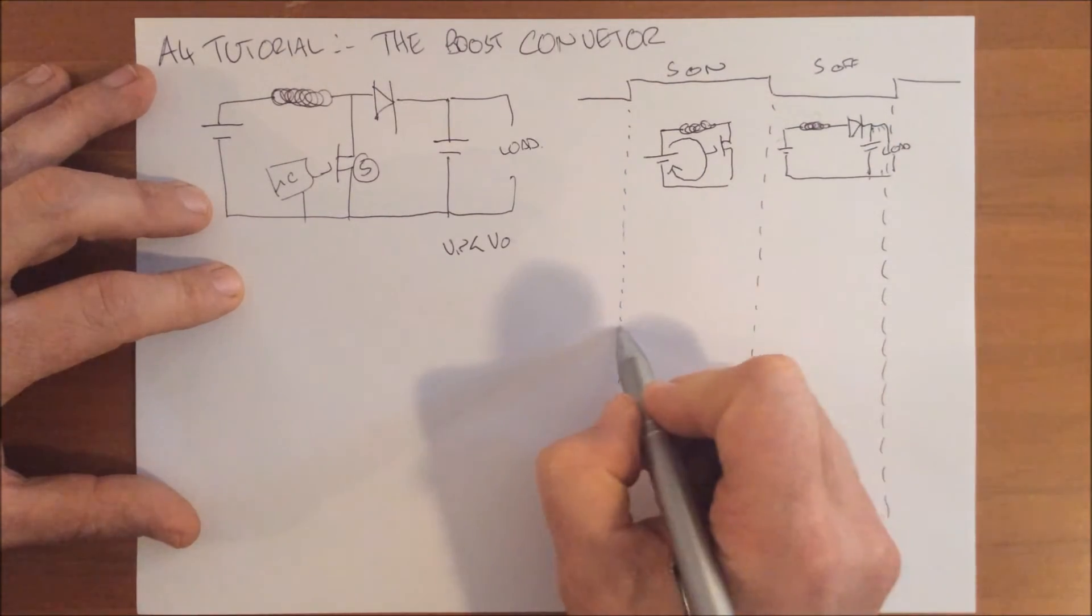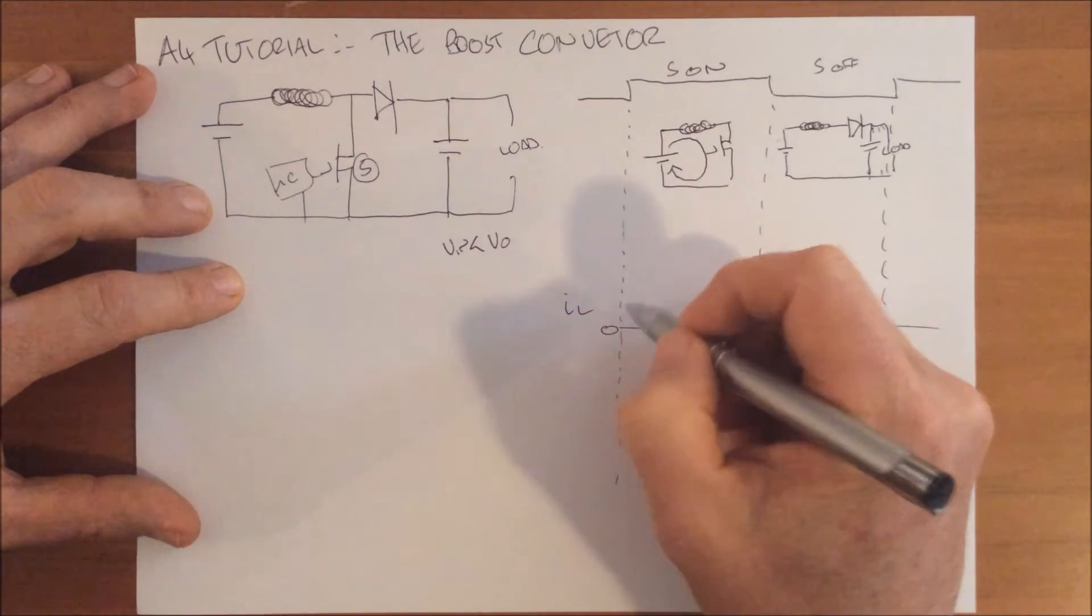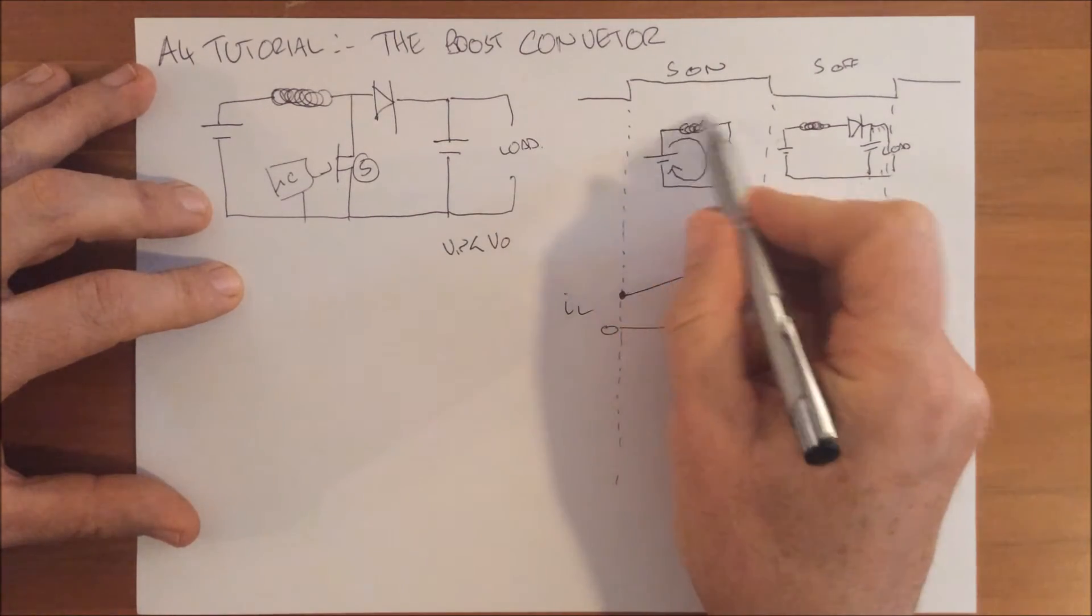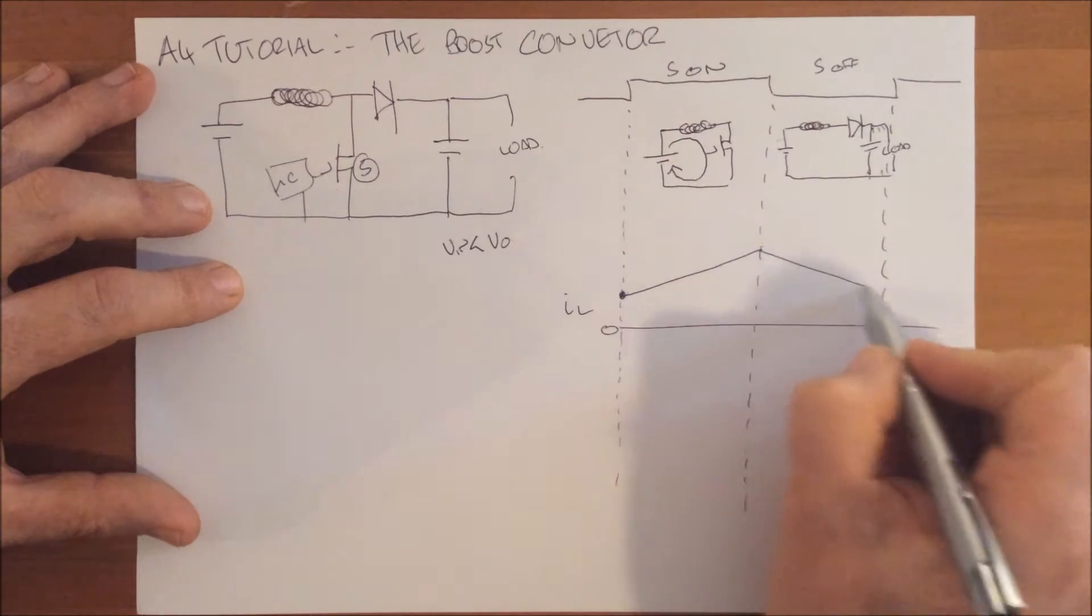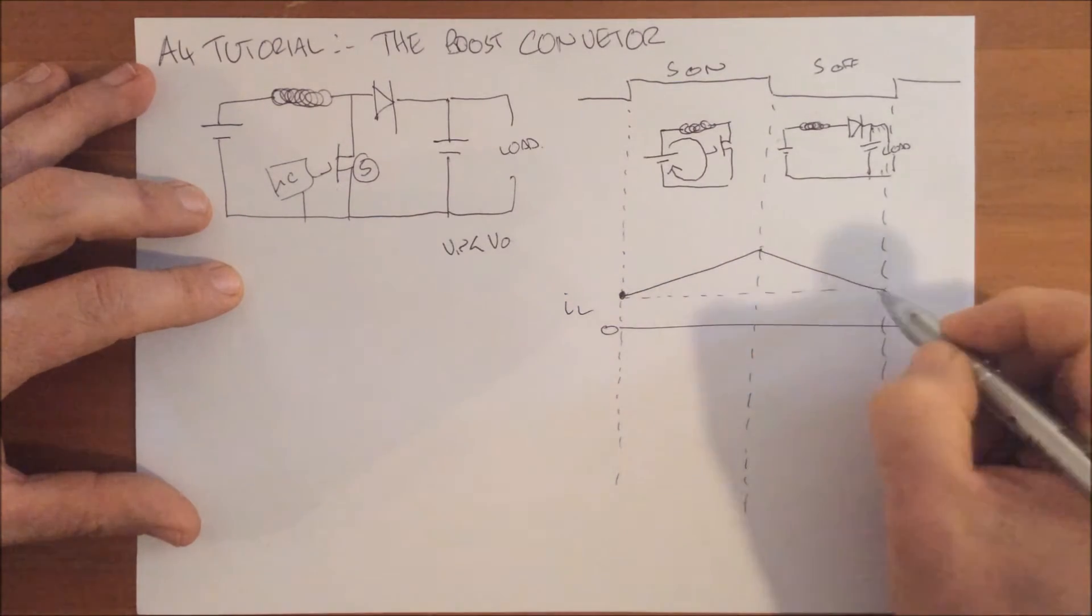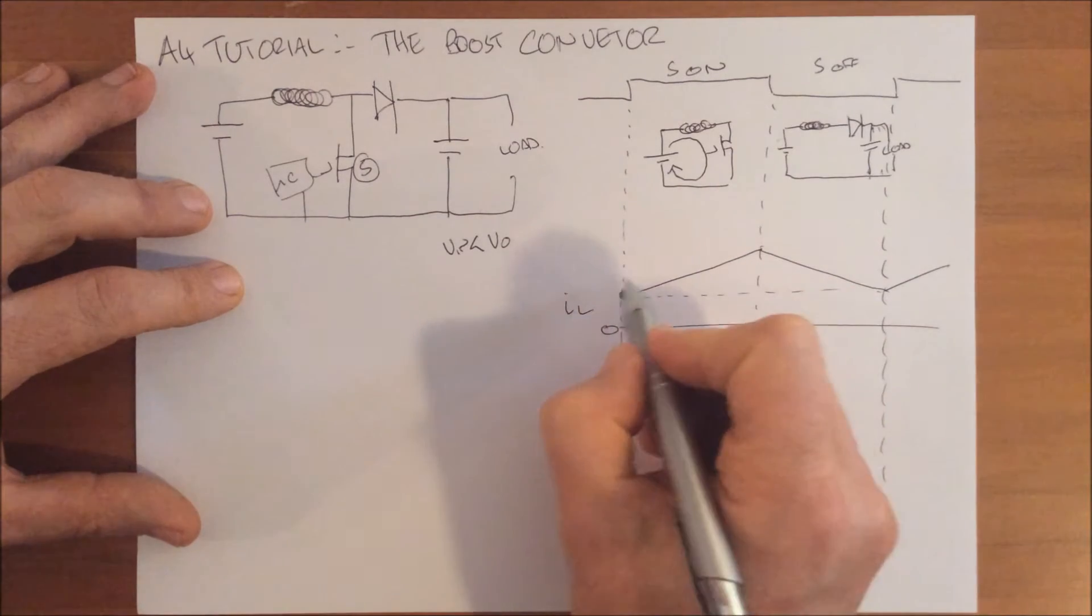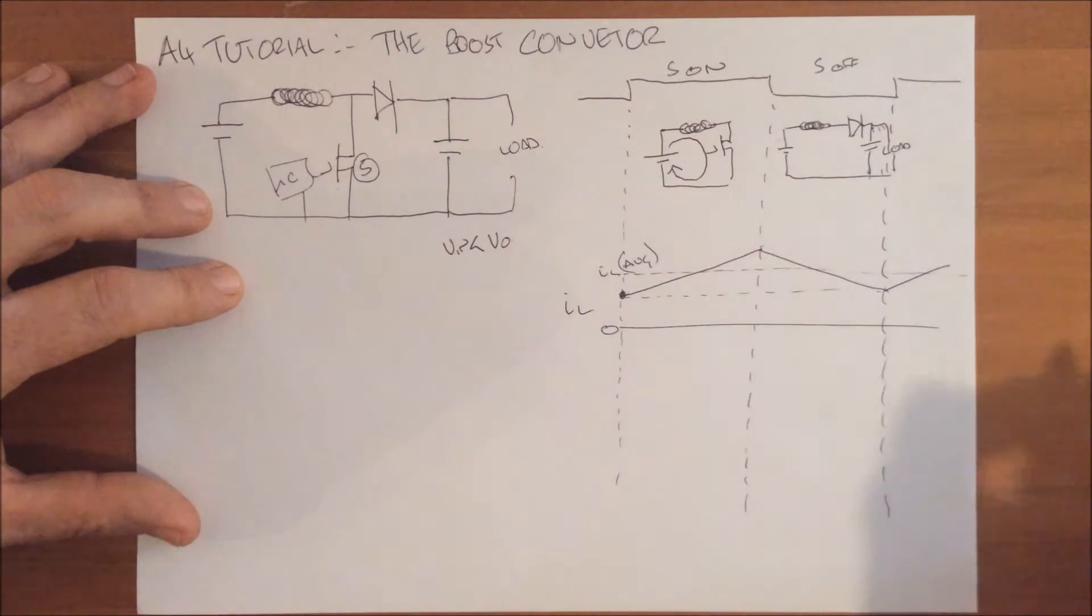If we look at the currents flowing through the inductor current, depending on where it starts, it will rise as that is being charged up. When this switch is turned off, that current will start to fall as it drains out of here. The average inductor current will be this point through here. This does raise issues around what we call continuous mode and discontinuous mode, which I'll come back to in a minute.